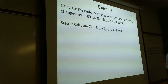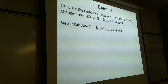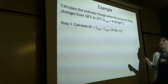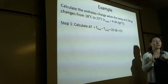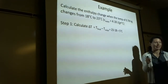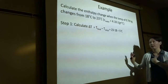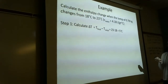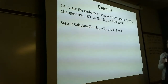Let's do this one together. Calculate the enthalpy change when the temperature of 0.78 kilograms of water changes from 18 to 23 degrees Celsius. Heat capacity of water is 4.18. First, calculate delta T — final minus initial, always. The final was 23, the initial was 18, so this ends up being positive. But remember, depending on how the problem is worded, it could end up being negative, so watch that sign notation carefully.